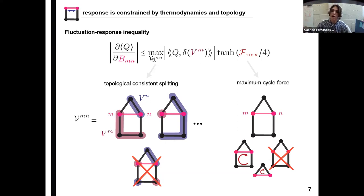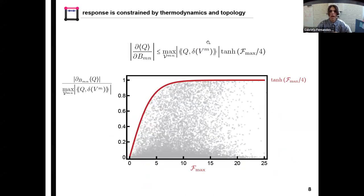So what we have over here is the maximum over all the possible splittings of the covariance of the observable with an indicator function over all states that are part of the subset that contains states M. And of course we can numerically verify this result. So if we plot the response now normalized by this topological term over here for randomly sampled rates and look at it as a function of the maximum cycle force of the system, we do see that indeed it's bounded by the tangent hyperbolic of the maximum cycle force over four.